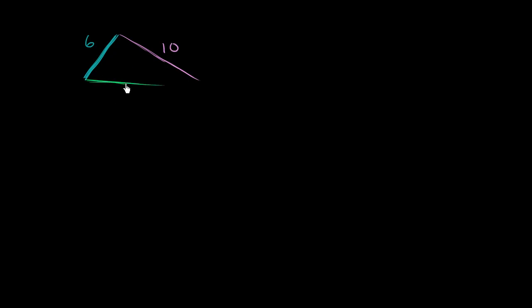Let's draw ourselves a triangle. Let's say this side has length 6, this side right over here has length 10, and this side right over here has length x.